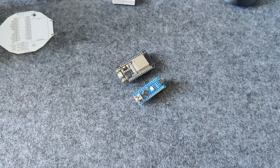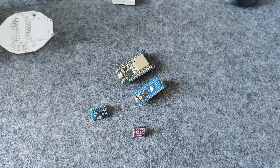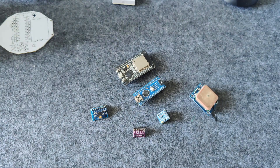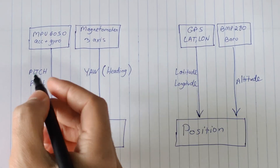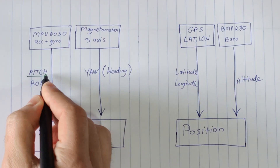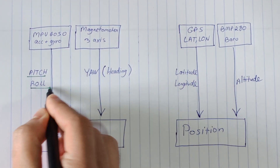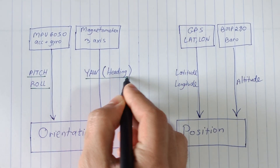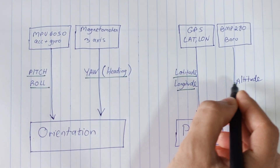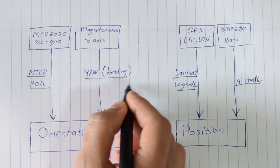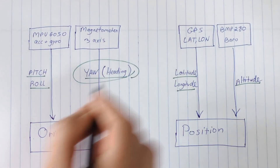Our flight computer consists of a microcontroller, IMU, barometer, magnetometer, and a GPS. Using these sensors we can get the orientation and position of the rocket and use the measurements for guidance, navigation, and control.